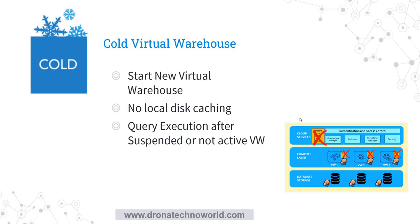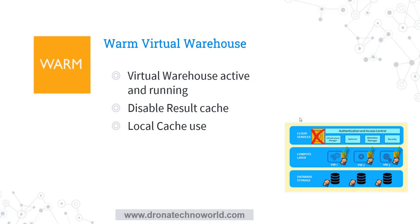Let's understand what a warm virtual warehouse is. It is the state of the virtual warehouse during which the virtual warehouse is active and running for a while and has also processed some queries. When the virtual warehouse is in a warm state, it is already running in active state. If you disable the result cache — that is the cache from the cloud services layer — and execute a query, it will use the local disk cache, meaning the cache from the compute layer will be used. This caching is called warm caching, and this kind of virtual warehouse state is called a warm virtual warehouse.